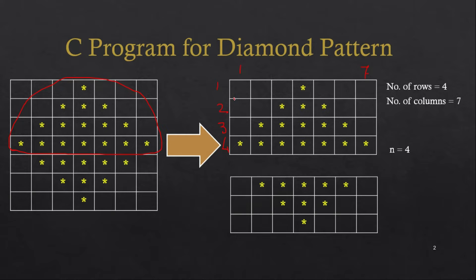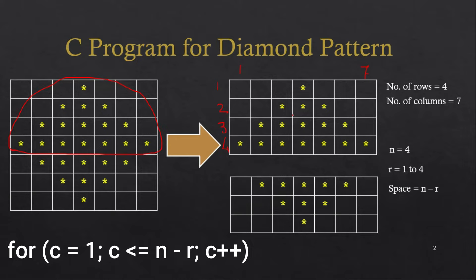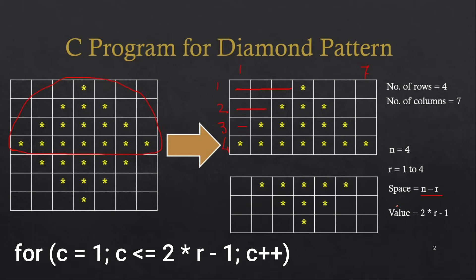Let's consider n equal to 4 as a fixed number. The variable r indicates the row number we are currently on — it can be 1, 2, 3, or 4. For spaces, at the first row we have three spaces, then two, then one — so as the row number increases, spaces reduce. The formula for number of spaces is n minus r.